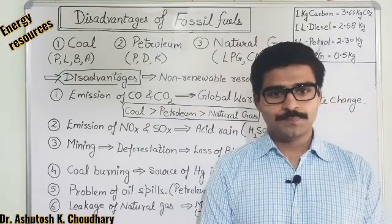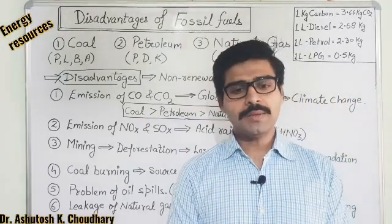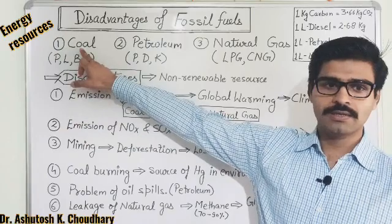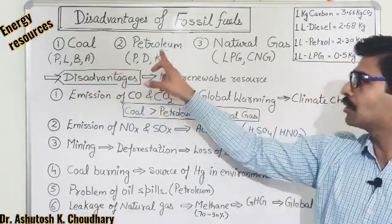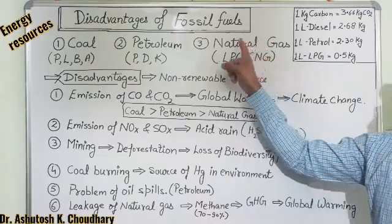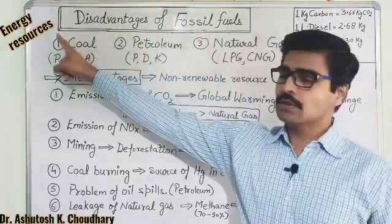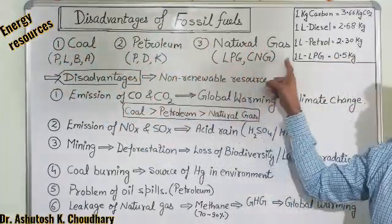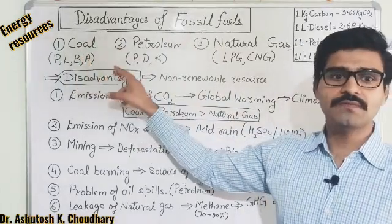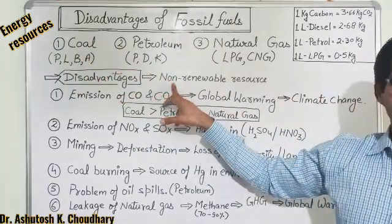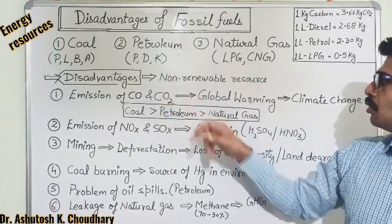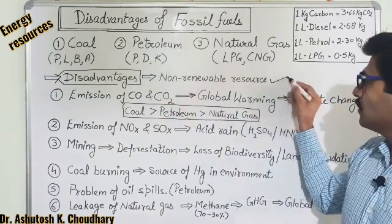As we know, there are three main examples of fossil fuels: first is Coal, second is Petroleum, and third is Natural Gas. All these fossil fuels are non-reliable sources of energy, and that is the first disadvantage or limitation of fossil fuels.